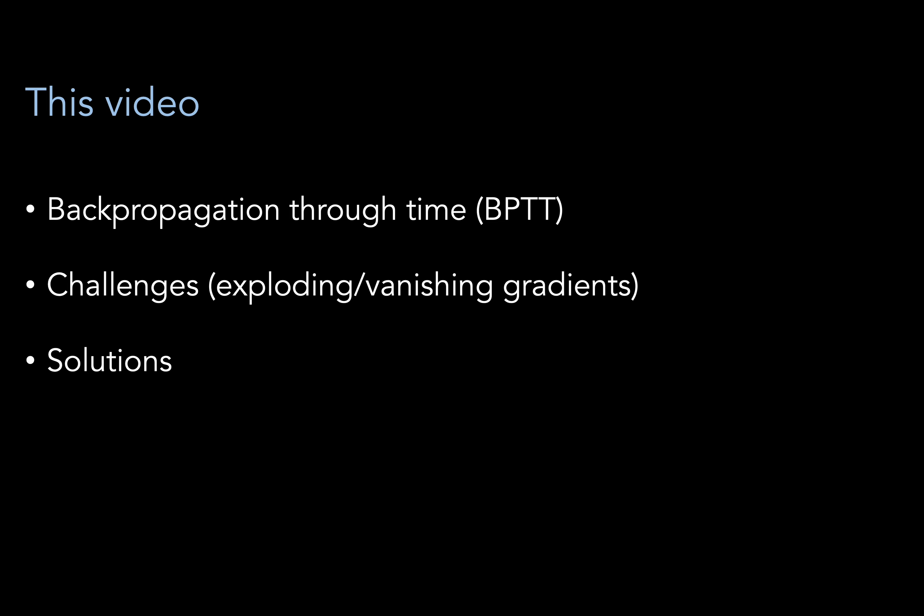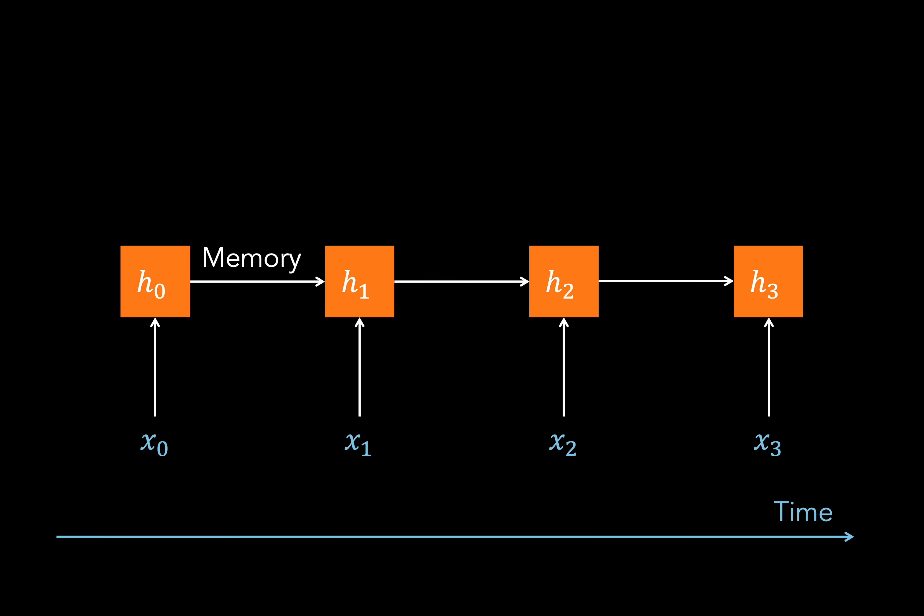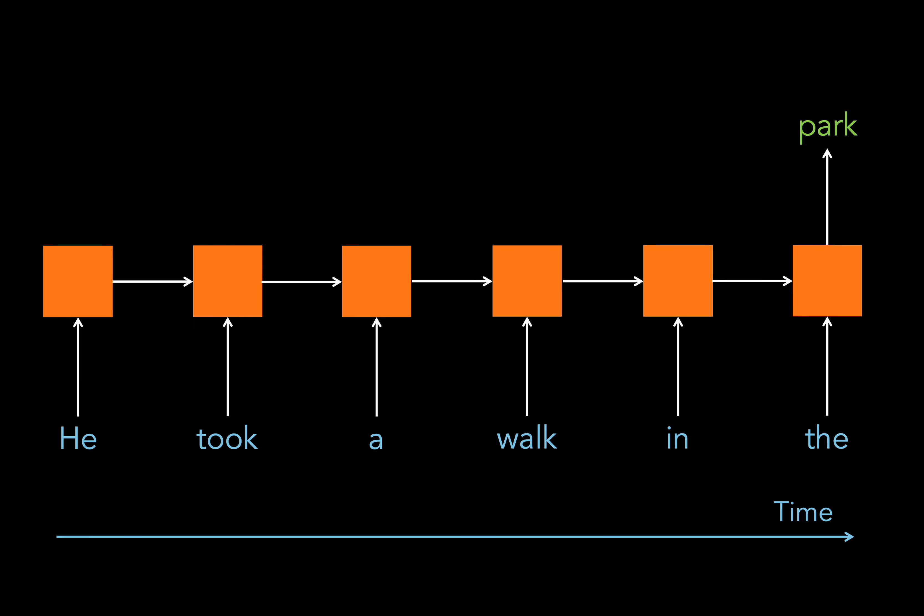But first, a very quick refresher on RNNs. These models have been used in a great variety of sequence applications, such as time series forecasting and natural language processing. They are well suited for this because their memory of previous time steps gives them a context under which they can process the next time step. This enables them to do tasks such as next word prediction.